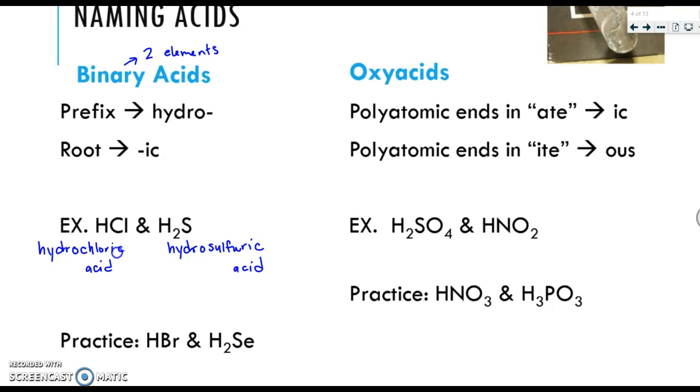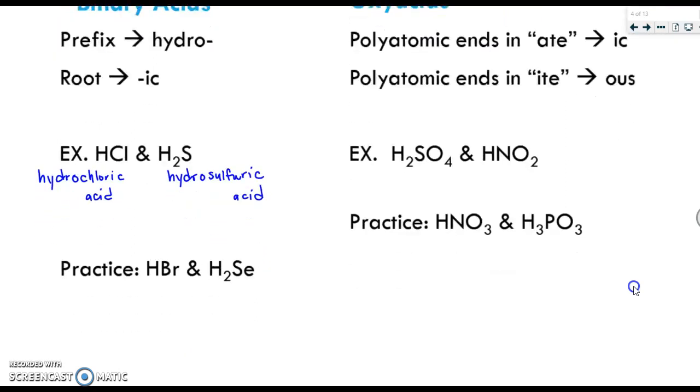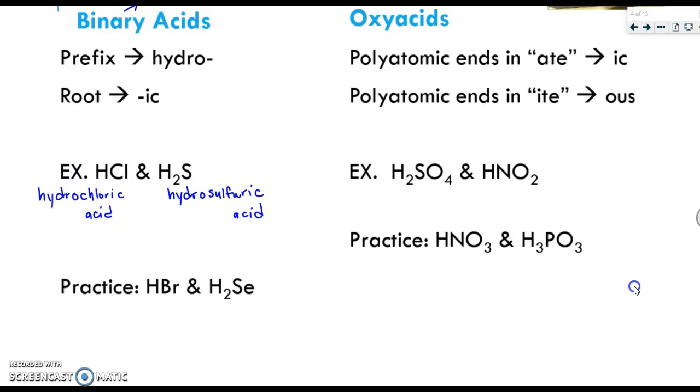We also have oxyacids, and these are things that have polyatomics in them. So they're named based on the polyatomic. If the polyatomic ends in ate, like sulfate, nitrate, phosphate, we change it to ic. If it ends in ite, like sulfite, nitrite, phosphite, we change the ending to ous. So it's all about the polyatomic ion here, and there's no hydro. So here, SO4 is sulfate. Therefore, this is going to be sulfuric acid. And NO2 is nitrite. So this would be called nitrous acid.